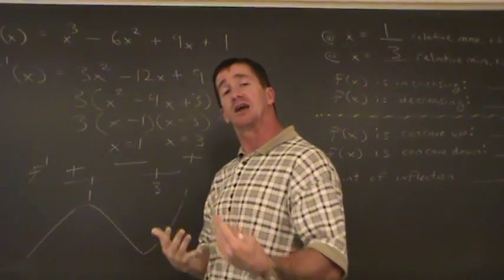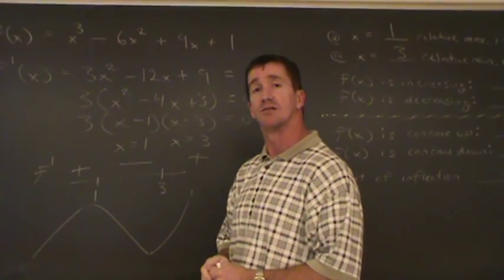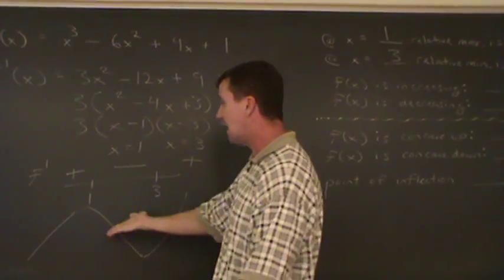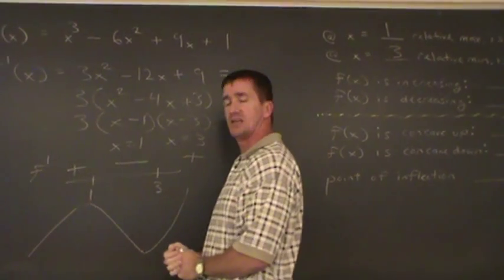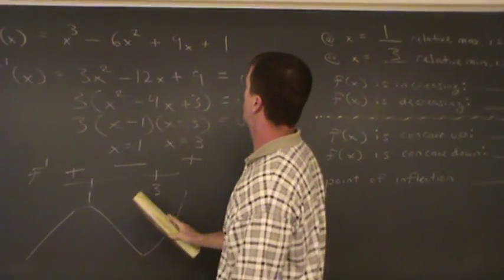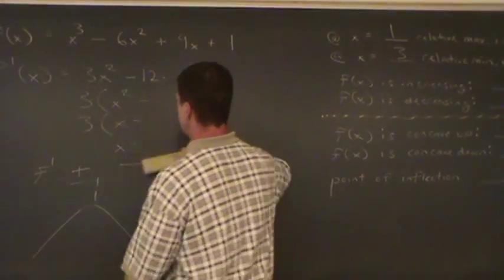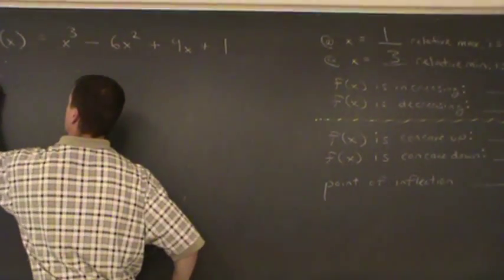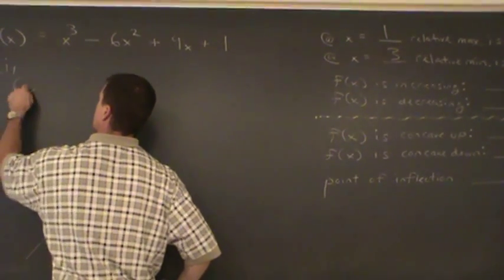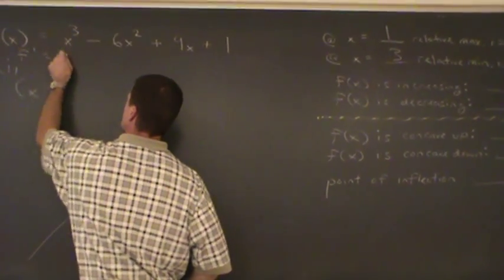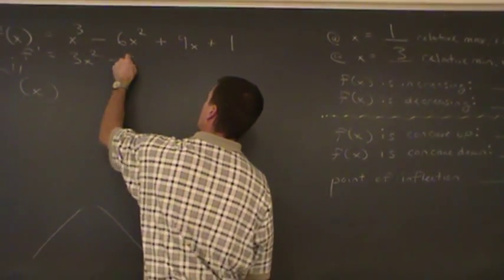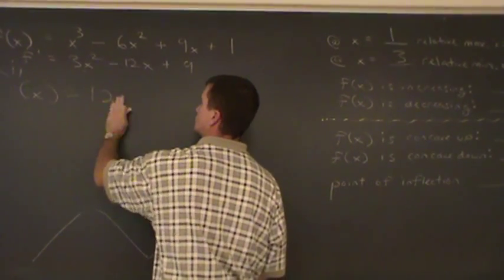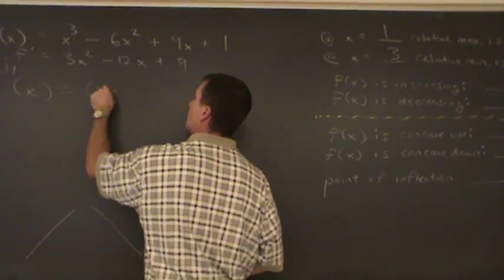So now we're gonna talk about concavity. Where's the function concave up and concave down? And what are the points of inflection, if any exist? And to determine that, you can probably see it from the picture I have here already, we're gonna examine the second derivative. And we're now gonna talk about the second derivative. Well everyone, the first derivative, as you recall, was 3x squared minus 12x plus 9. So the second derivative is 6x minus 12.